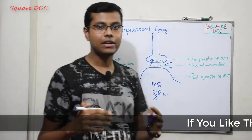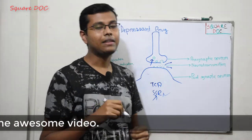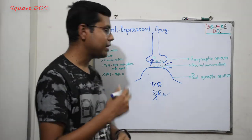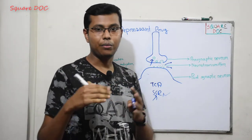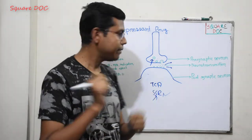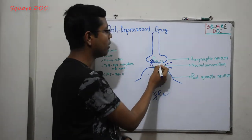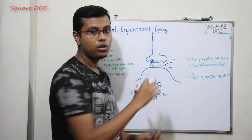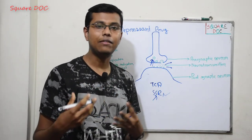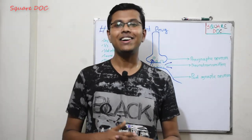The TCA drug — Tricyclic Antidepressant — works on depression through the DSN pathway: dopamine, serotonin, and norepinephrine. These are the three neurotransmitter levels in the brain. The TCA drug prevents the reuptake of serotonin and norepinephrine back into the presynaptic neuron, increasing their level in the synapse. This raises brain neurotransmitter levels and produces an antidepressant effect. This is how TCA drugs work as Tricyclic Antidepressants.